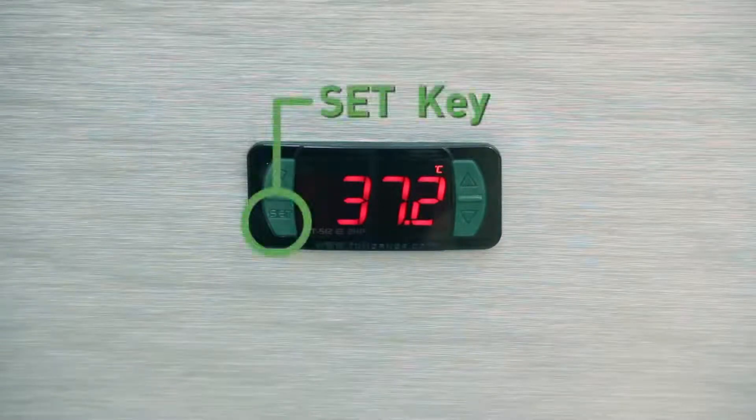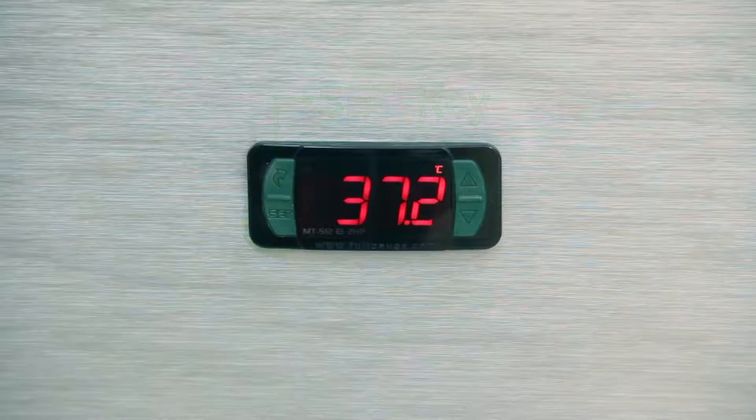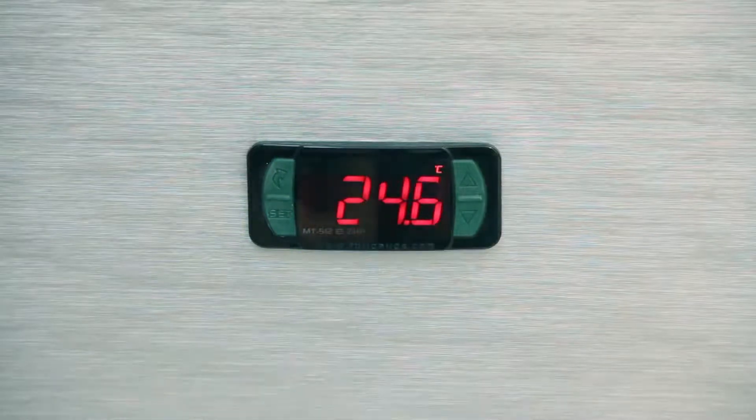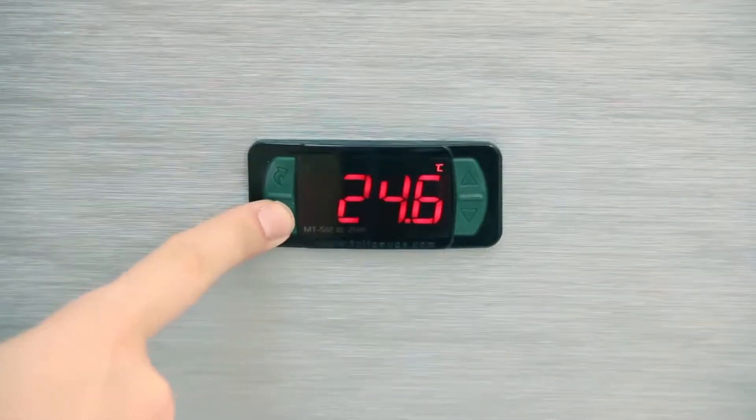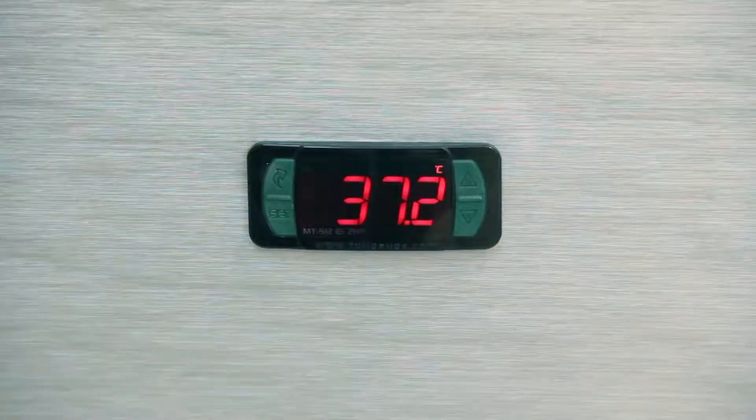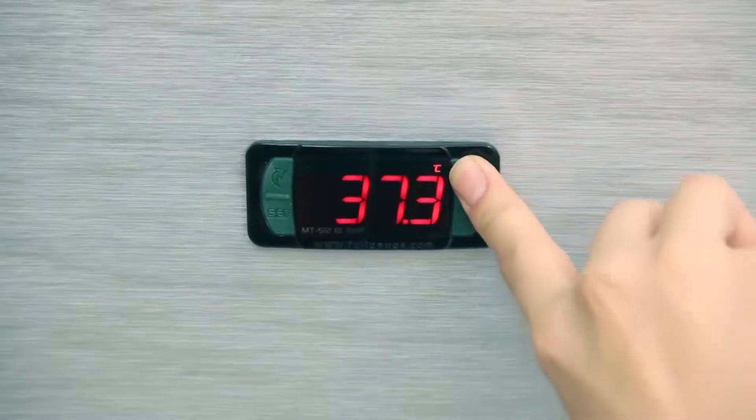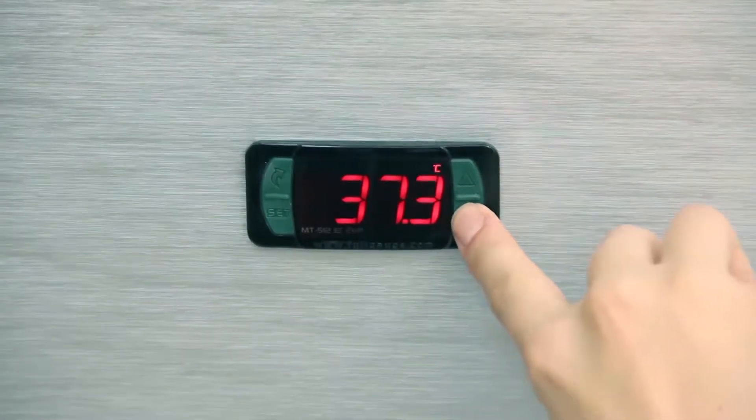Basic operations - Set point: The set point is the function we set to switch off the installation charge. The set key allows access to this function and also meets the confirmation function or enter for all controller settings. To change the set point, press set for 2 seconds until the set message appears on the display. When the key is released, the adjusted control temperature will be shown. Use the up or down keys to change the value. When you get the temperature value, press set to record it.